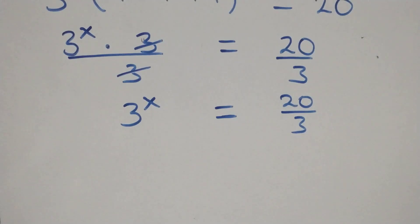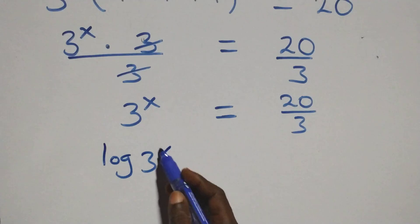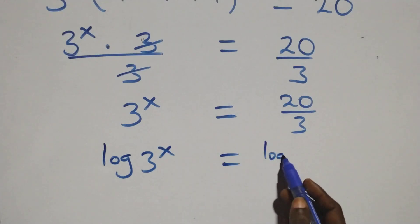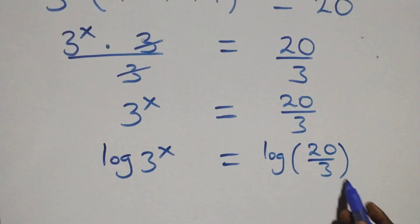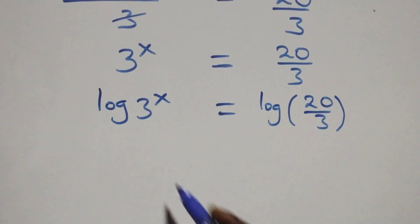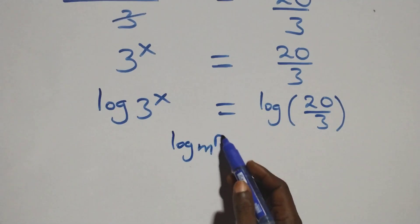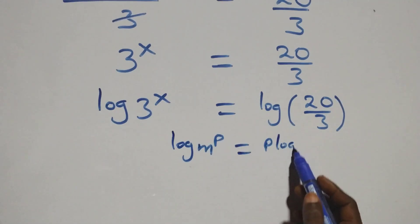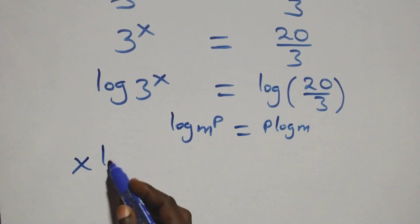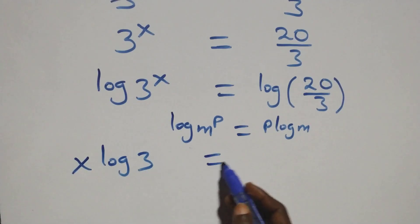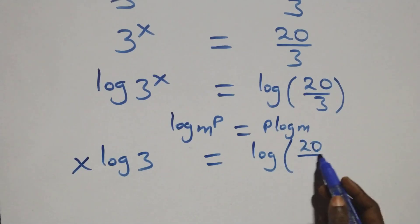Then the next step: we take the log on both sides. So we have log of 3 raised to power x equals log of 20 over 3. We then apply the power rule of logarithms: when we have log n raised to power p, this is the same thing as p log n. So this becomes x log 3 equals log 20 over 3.